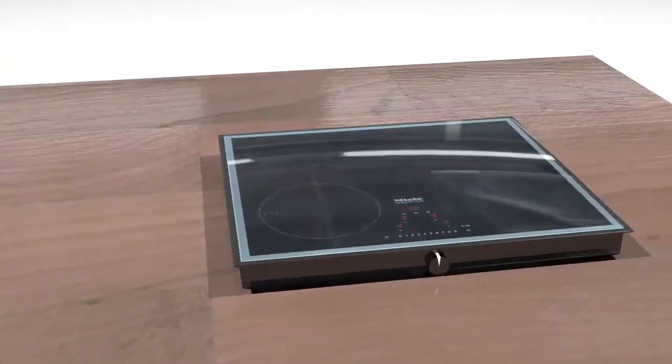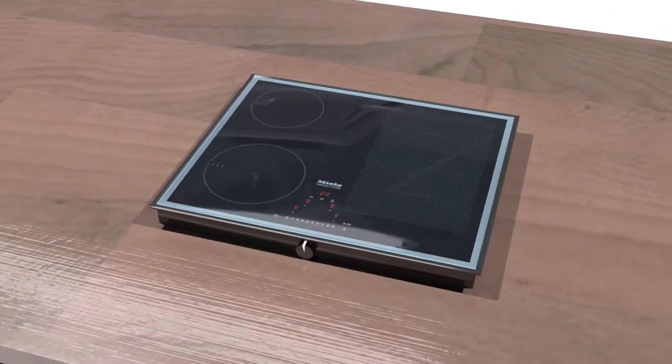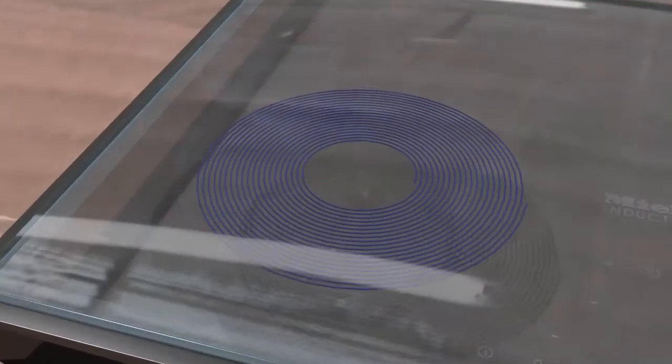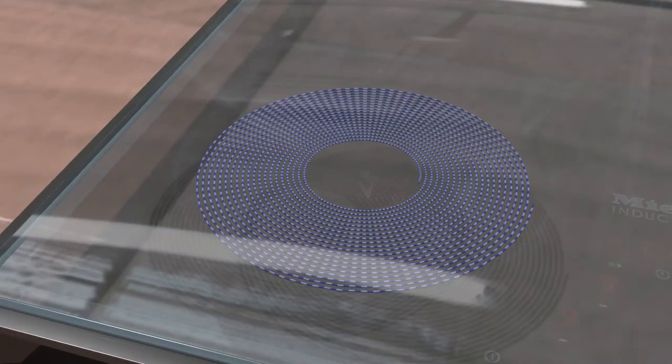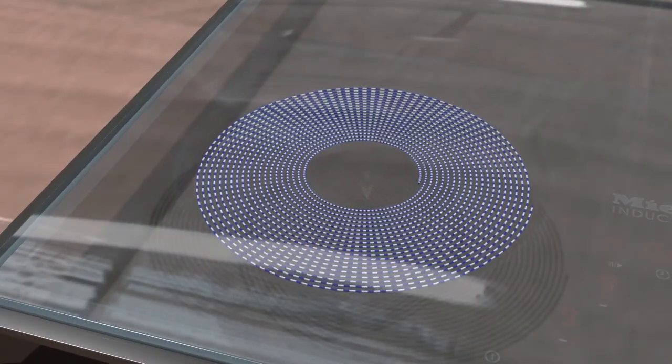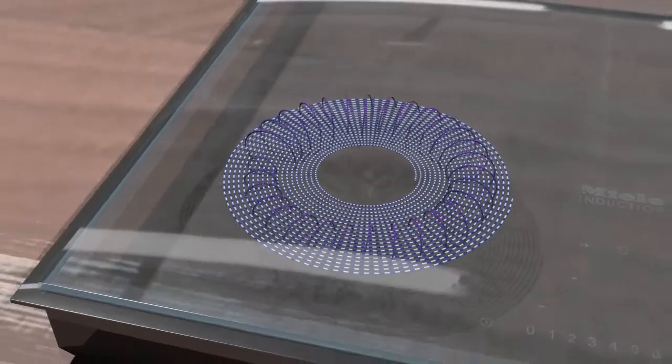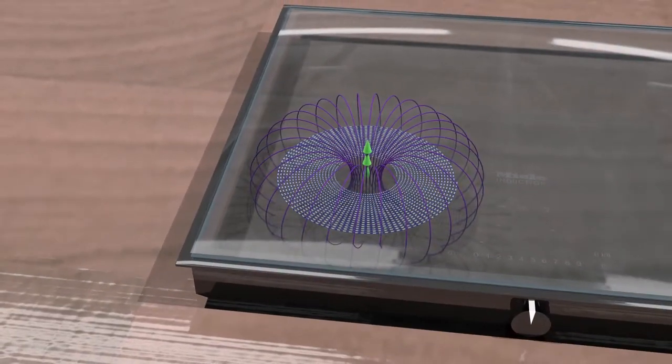Induction burner consists of a ceramic or glass plate with an electromagnetic coil beneath it. When you turn on the burner, an alternating electric current runs through the coil and generates a fluctuating magnetic field.